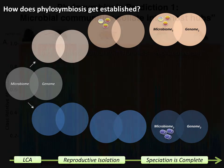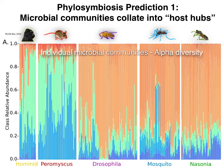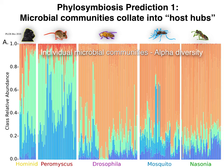In looking at phylosymbiosis, we've taken a comprehensive approach by studying several types of animals reared in the lab with several species within each genus — including Peromyscus, Drosophila, mosquitoes, and Nasonia — plus wild hominid data from PLOS Biology. Right off the bat, there's a degree of specificity: mammalian lineages tend to have similar bacterial community structure dominated by Firmicutes and Bacteroidetes, while insects tend to be dominated by proteobacteria.